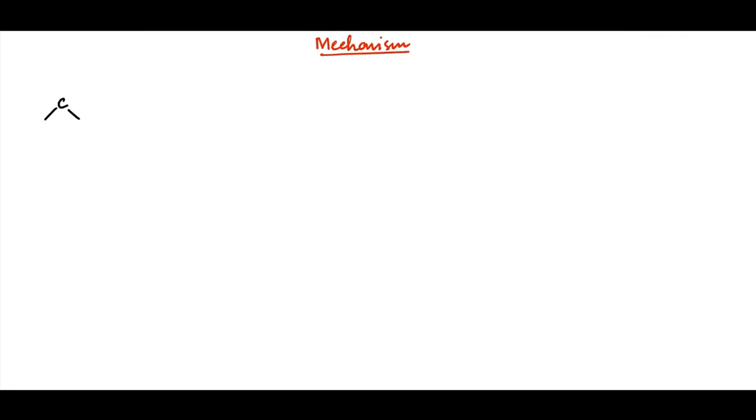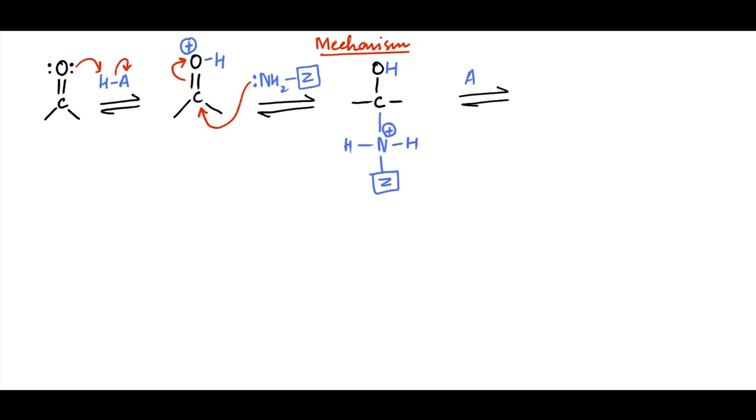In the first step of mechanism, the carbonyl group is protonated, rendering it more electrophilic. The amine attacks the protonated carbonyl carbon to generate a tetrahedral intermediate. The positively charged nitrogen of this tetrahedral intermediate is deprotonated to form a compound called carbinolamine.